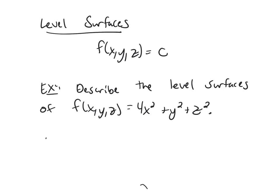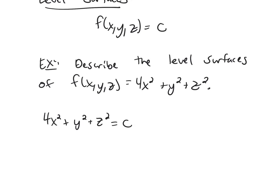So we have 4x squared plus y squared plus z squared equals C. This is the equation of our level surface.